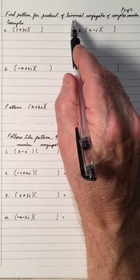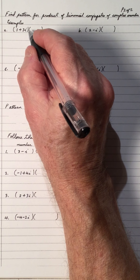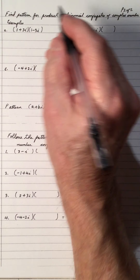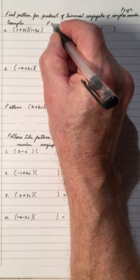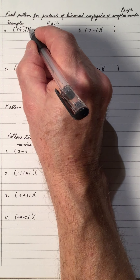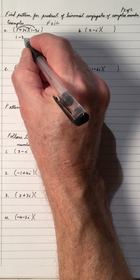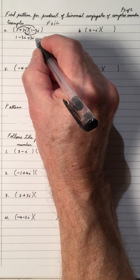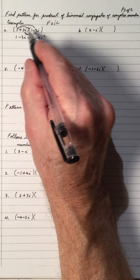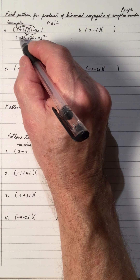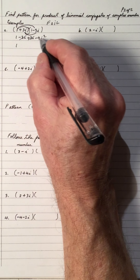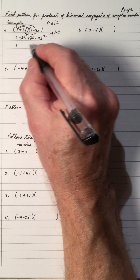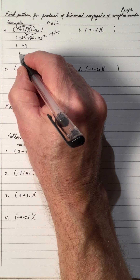Find a pattern for the product of binomial conjugates of complex numbers. The conjugate of 1 plus 3i is 1 minus 3i. Multiplying by FOIL: first is 1, outside is negative 3i, inside is 3i, and last is negative 9i squared. Because they are conjugates, the middle terms cancel — negative 3i plus 3i is 0 — giving 1. And negative 9i squared equals positive 9, so we get 10.